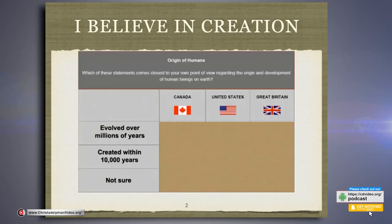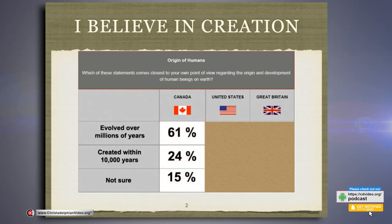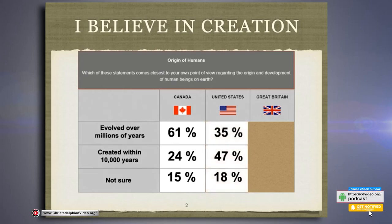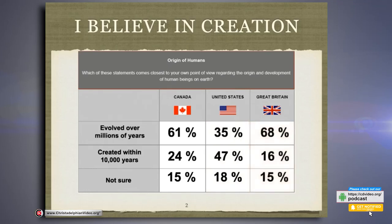Here is a questionnaire that was given to some people in different countries, asking about the origin and development of humans on earth. In Canada, 61% believed they evolved, 24% created within 10,000 years, and 15% were not sure. In America, nearly half believed humans were created within 10,000 years. But for Great Britain it was quite different — 68% believe humans evolved over millions of years, just 16% created within 10,000, and 15% not sure.